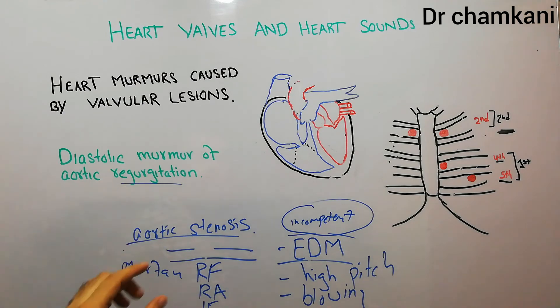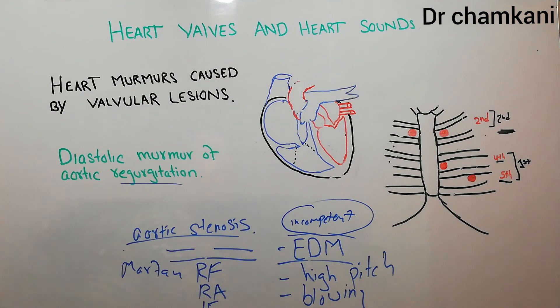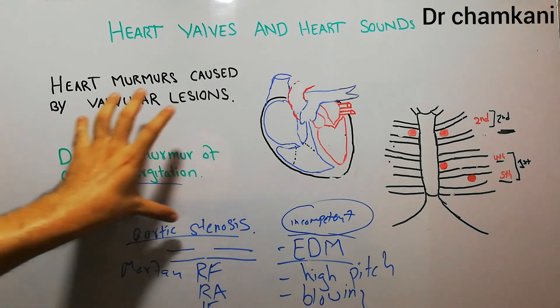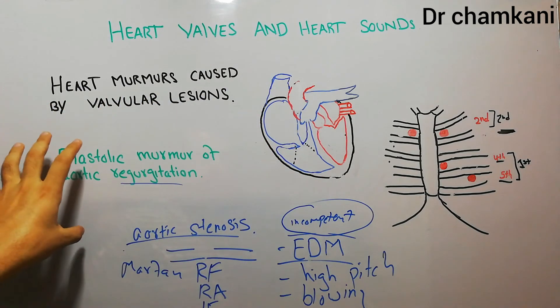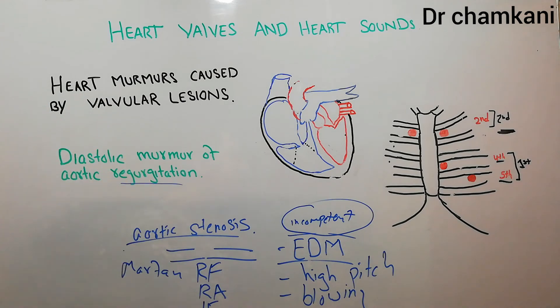Papillary muscle damage will not lead to any problem with the aortic valve — rather it will cause a problem with the mitral valve. So this is just an introduction about what the aortic regurgitation murmur is and what are its qualities. Thanks a lot for watching the video.